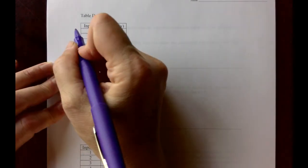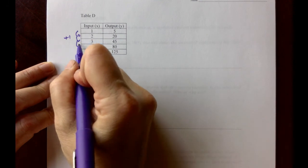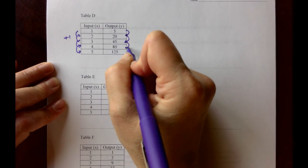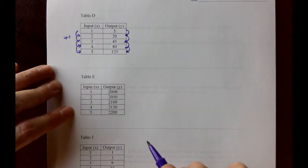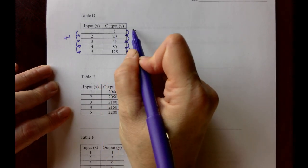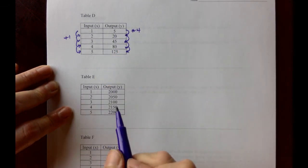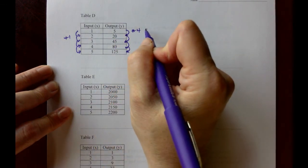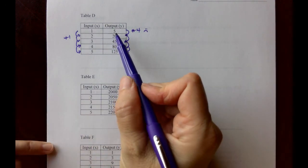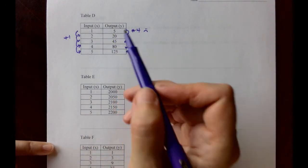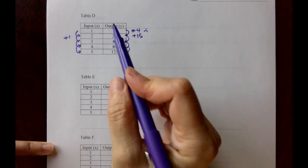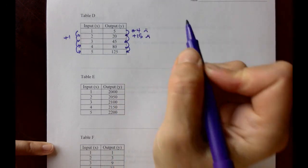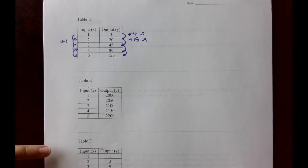A few more to take a look at here. Table D. The x's are increasing by 1 each time. The y's go from 5 to 20 to 45 to 80 to 125. If we try multiplication here, 5 times 4 would be 20, but 20 times 4 would not be 45. So it's not exponential. Multiplication by 4 did not work. To go from 5 to 20 with addition, we would use adding 15. 5 plus 15 would be 20, but 20 plus 15 is not 45. So this one ends up being neither exponential nor linear.